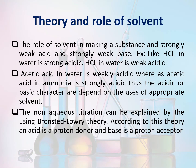Theory and role of solvent: The role of solvent is in making a substance strongly or weakly acidic and strongly or weakly basic. For example, hydrochloric acid in water is strongly acidic, whereas acetic acid in water is weakly acidic, but acetic acid in ammonia is strongly acidic. Thus, the acidic or basic character depends on the use of the appropriate solvent. Non-aqueous titration can be explained using the Bronsted-Lowry theory, where an acid is a proton donor and a base is a proton acceptor. In non-aqueous titration, the reaction between the titrant and the titrate involves one as a proton donor and another as a proton acceptor — weak acid versus strong base, or weak base versus strong acid.